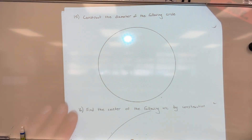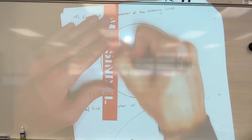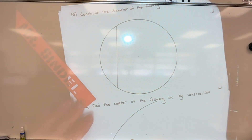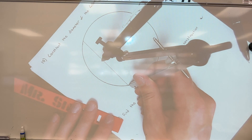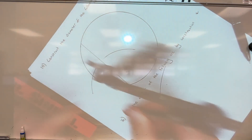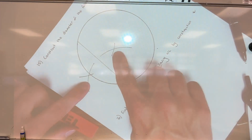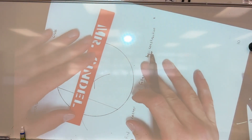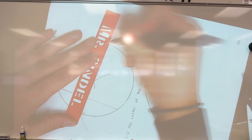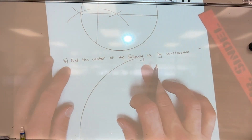Number fifteen: finding the diameter. This is a two-step construction. First, draw any random chord inside the circle. Then do a perpendicular bisector of that chord — make sure the compass is set to more than half the chord length. Mark arcs above and below, move the tip to the other end, mark intersections, and connect the two intersections with a line. That line is the diameter of the circle.